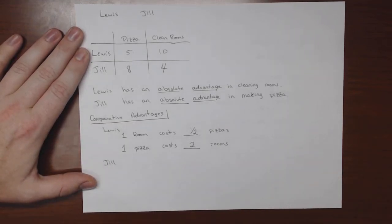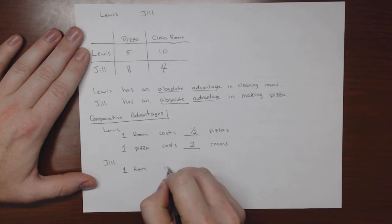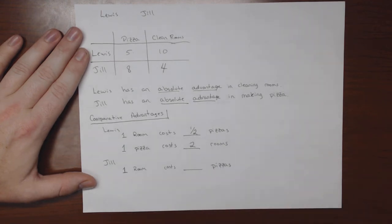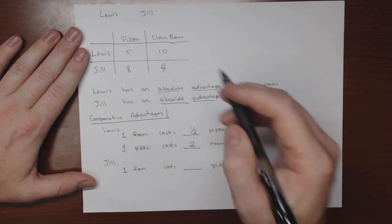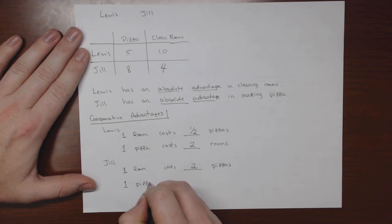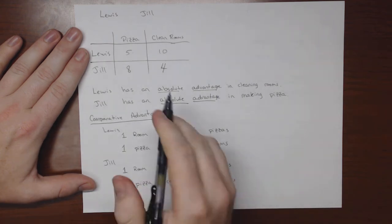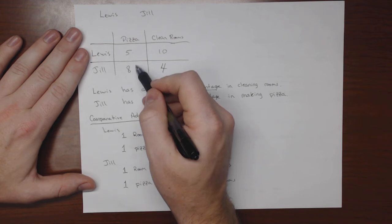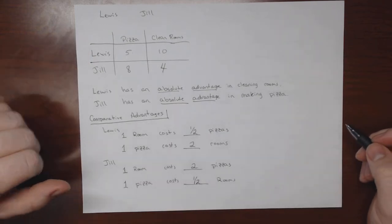For Jill, one room costs her how many pizzas? We look at her two numbers — divide both by four — and we get two pizzas. So one room costs Jill two pizzas. And one pizza costs Jill how many rooms? We divide by eight, and we see that one pizza will cost Jill half of a room.